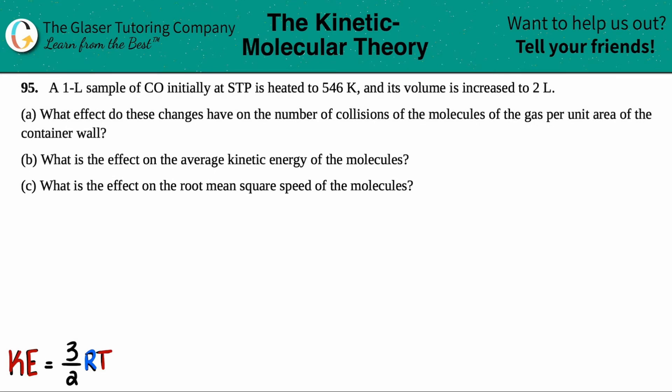Number 95. A 1 liter sample of carbon monoxide, which is CO, initially at STP is heated to 546 Kelvin and its volume is increased to 2 liters. Then we have letter A. What effect do these changes have on the number of collisions of the molecules of the gas per unit area of the container wall?